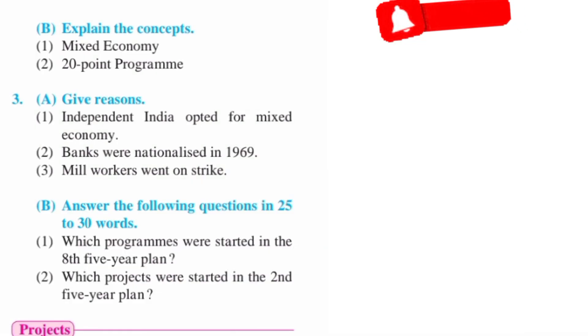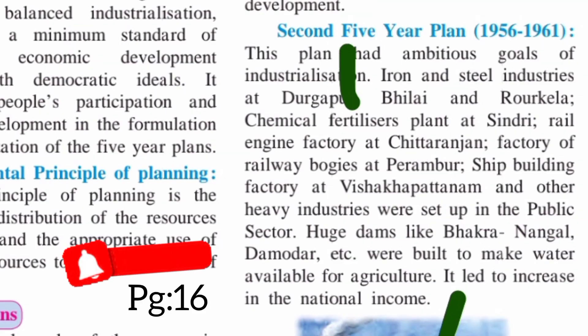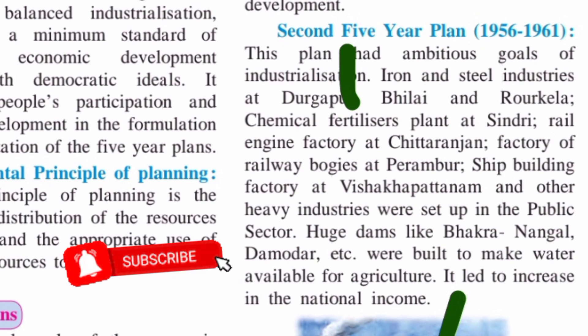Next question B second: 'Which projects were started in the Second Five Year Plan?' The answer is on page number 16. Write from 'iron and steel industries' up to 'national income.'